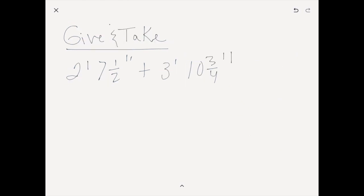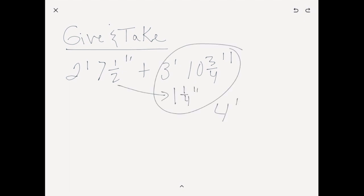The give and take method is really similar to compensating. It's the kid who wants to make that three feet ten and three-fourths inches into four feet — they're like, that's really close to four. But they do it up front. So they chunk off one and a fourth inches to make that four feet. But then what are they left with? They're left with two feet six and a fourth inches. They put that together and still get six feet, six and a fourth inches.